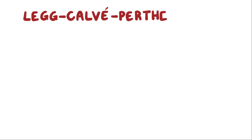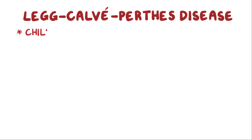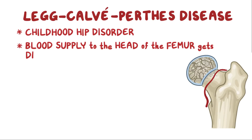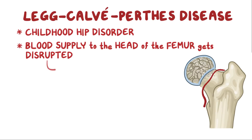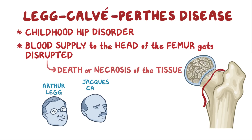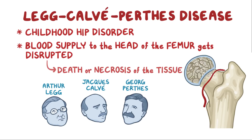Legg-Calvé-Perthes disease is a childhood hip disorder that occurs when the blood supply to the head of the femur gets disrupted and leads to death or necrosis of the tissue. The disease was named after three doctors: Arthur Legg, Jacques Calvé, and Georg Perthes.